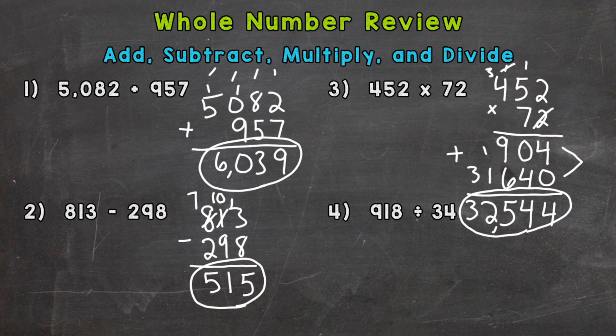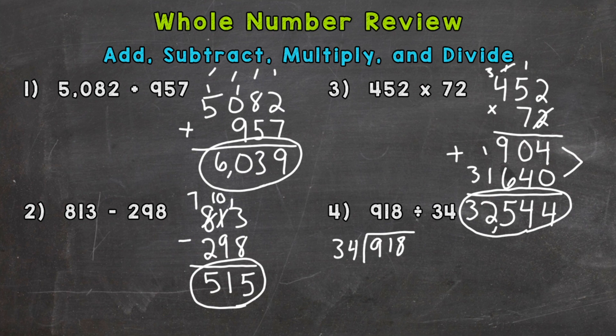Lastly, we have division: 918 divided by 34. The first thing I need to do — 9 divided by 34 — I cannot do that and get a whole number, so I move to 91. 91 divided by 34: how many whole groups of 34 can I pull out of 91? Only 2 — that gets me to 68, which is as close as I can get. So I need a 2 above the 91.